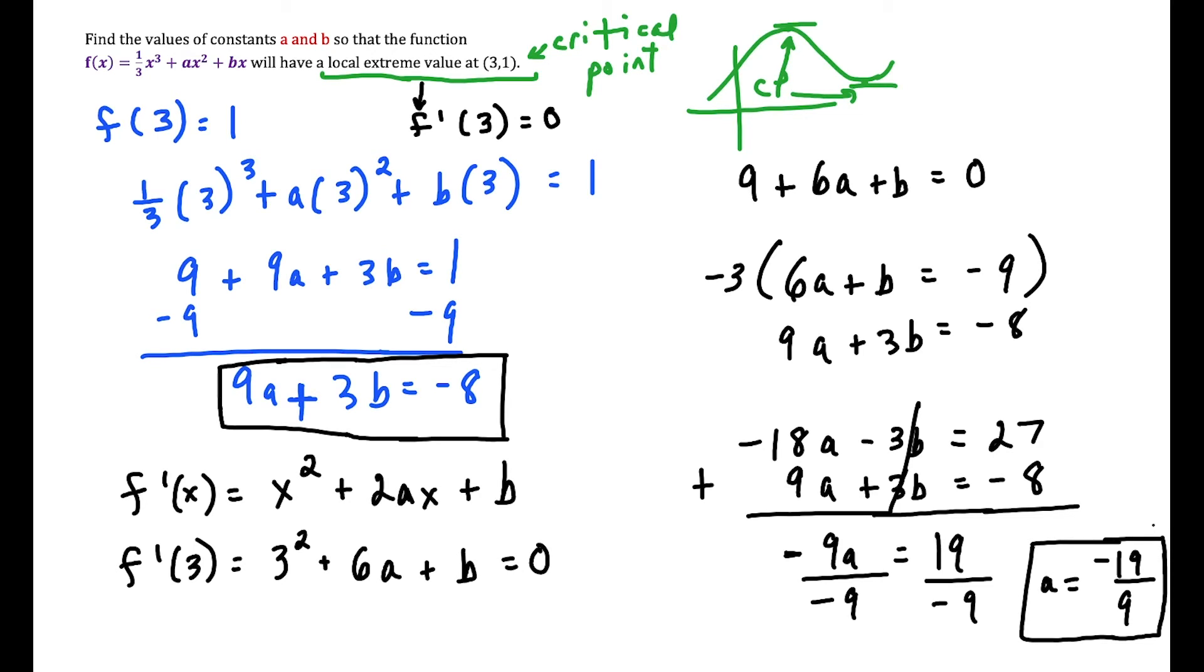So now all we're going to have to do here to solve for b is plug the value of a back into either one of the equations that we found to solve for the other variable. Let's plug it into this one here, because when we multiply 9 times -19/9, the 9 over 9 is going to cancel. So it's easier to plug into that one.